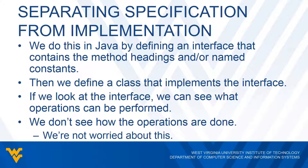For example, whenever you write programs and use methods from the Math class, are you concerned about what the pow method or the abs method actually does internally? Probably not. You know the pow method will raise something to some power, and the abs method will give you the absolute value. You don't have to look at the class definition to see how it's done — you just know what's being done. We're doing the same thing here: our interface contains all the method headings so we know what the operations are, without worrying about how they're done.